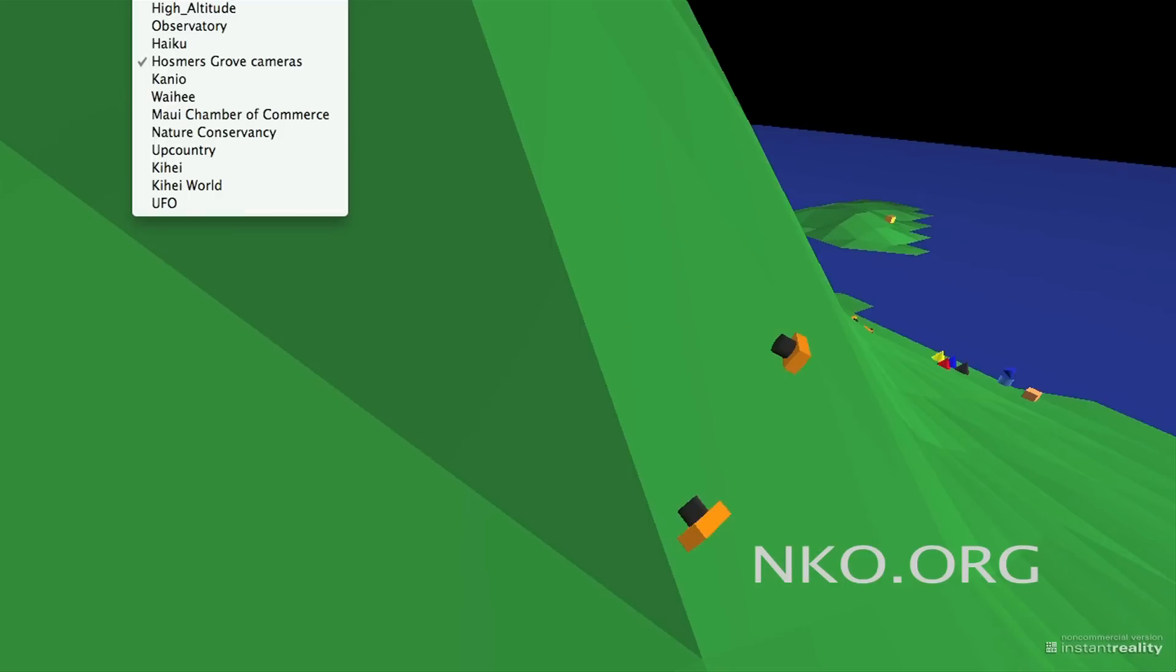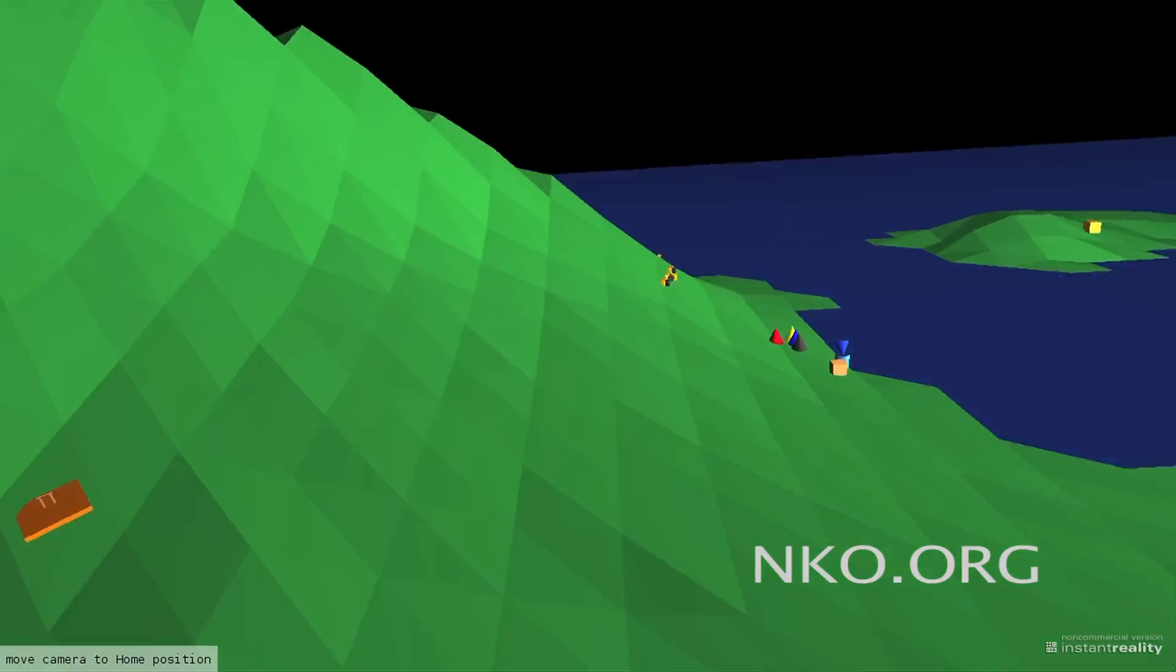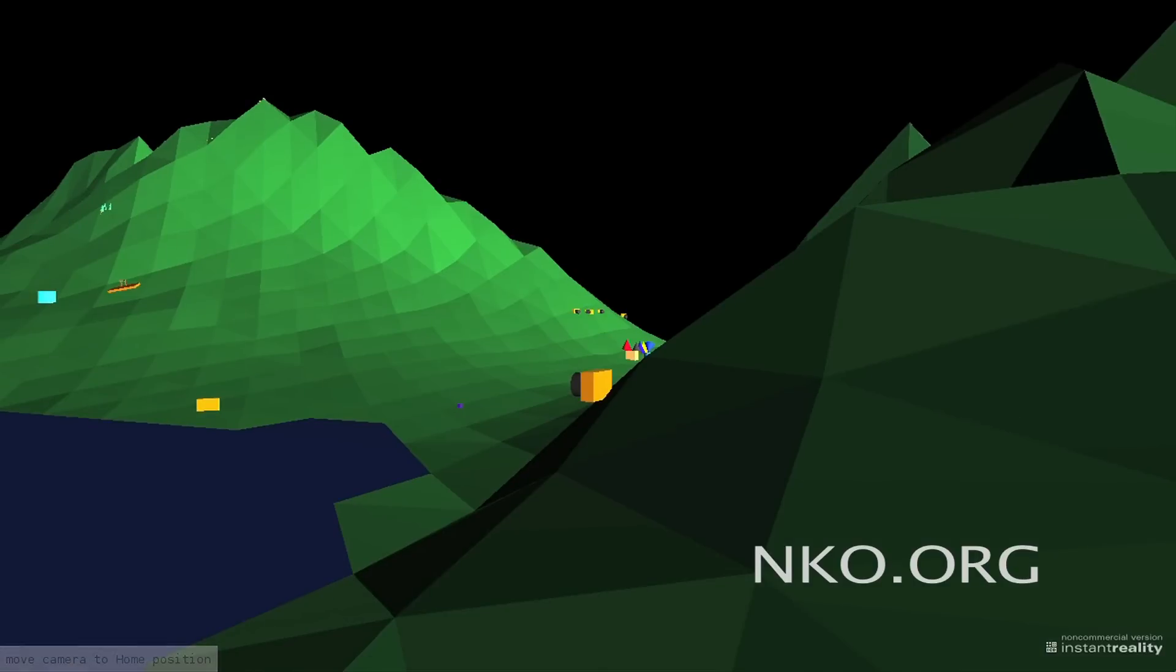These camera icons, if you click on them, would bring you to the photograph of that particular area. If we click on the Waihea image and then reset the camera position, we now change over to Waihea area of Maui.